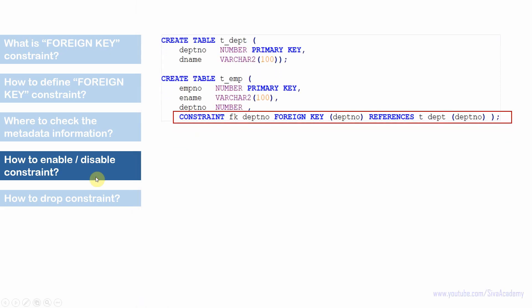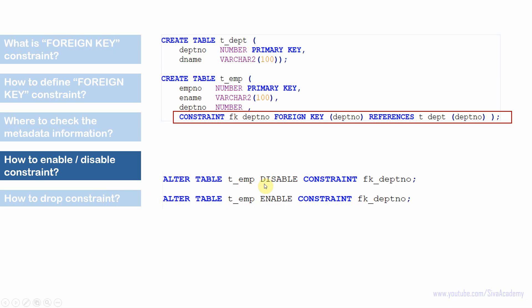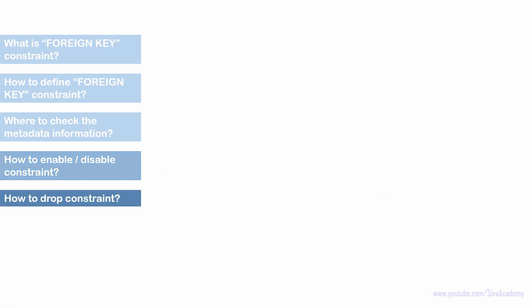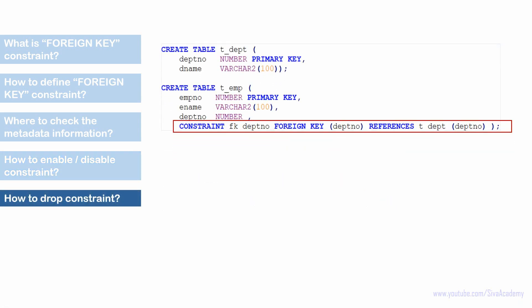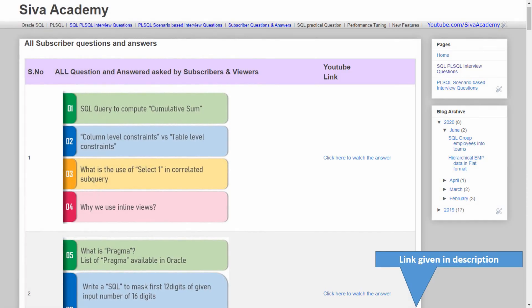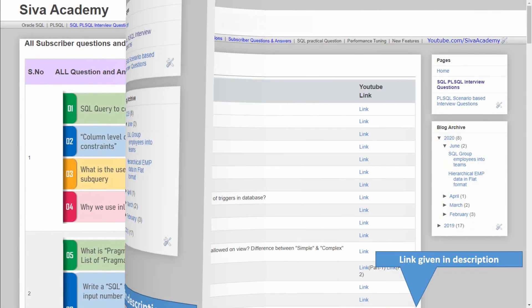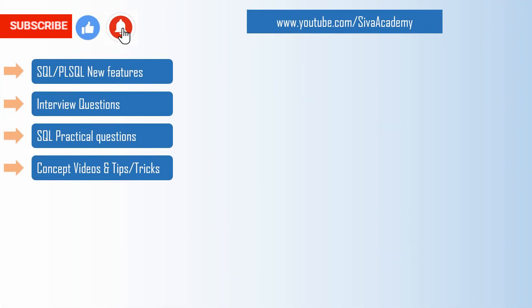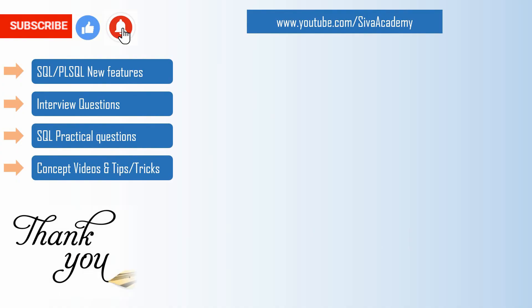Here is the syntax for quick reference. After creating the table, you can use ALTER TABLE table_name, then DISABLE or ENABLE CONSTRAINT followed by the constraint name. To drop the constraint, use ALTER TABLE table_name DROP CONSTRAINT constraint_name. If you learned something new, please like this video. Post questions in the comments or via the provided email. Check whether a similar question has already been answered in the subscriber or interview question series before writing in. Thanks a lot for watching — please subscribe and stay tuned for new feature videos, interview questions, SQL practical questions, and concept videos.